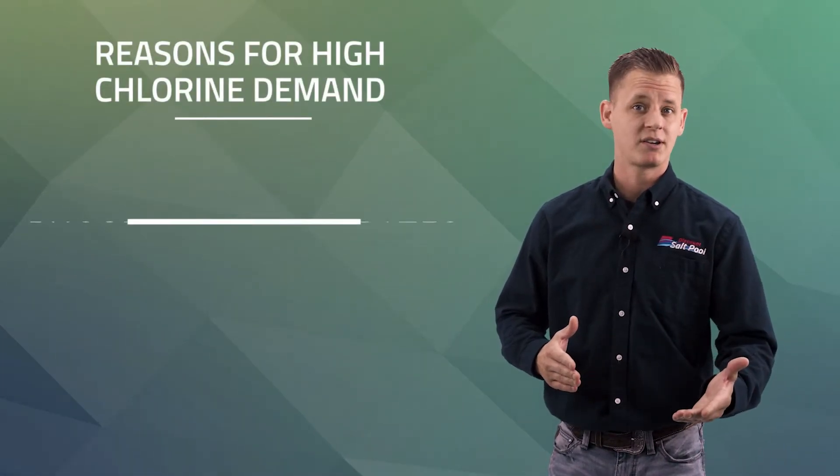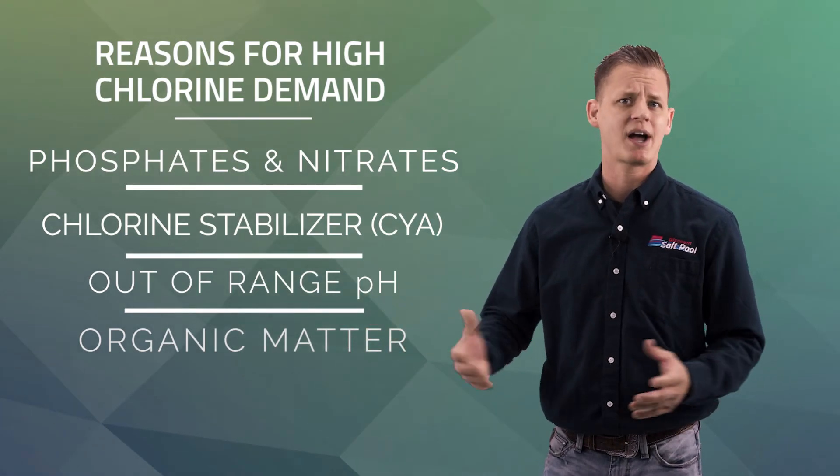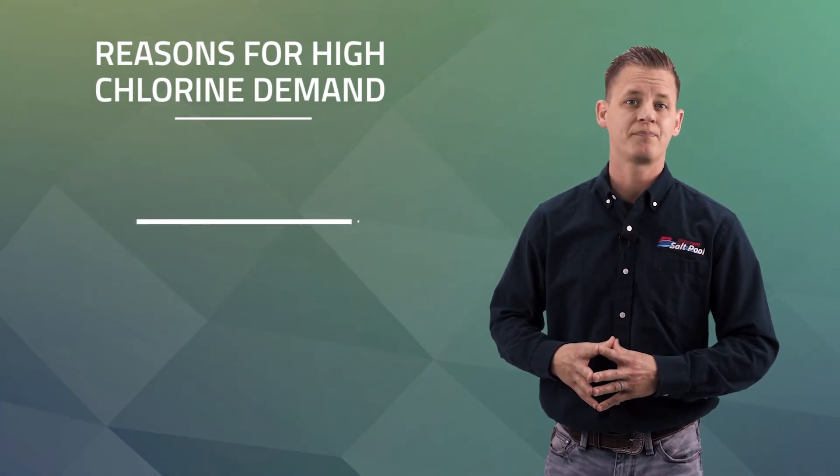The big culprits for high chlorine demand include phosphates and nitrates, stabilizer, or pH that's out of range. Lots of organic matter in the pool can cause this as well. Make sure these things are in check and at their optimal levels.